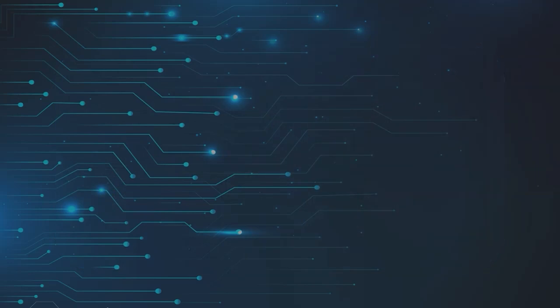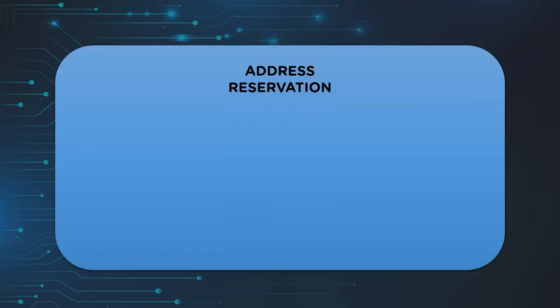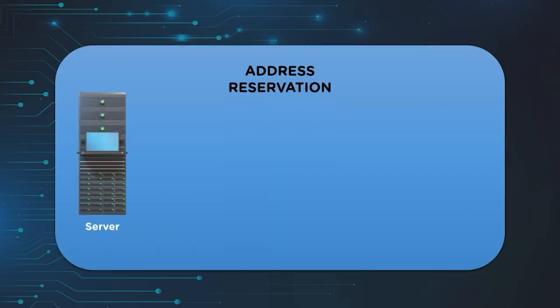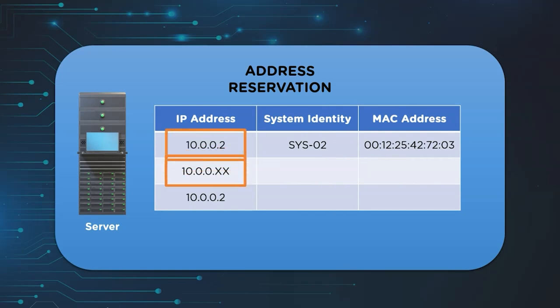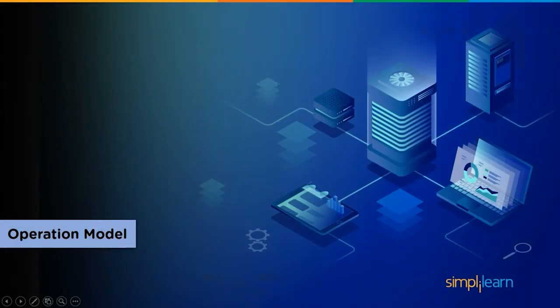Lastly we have address reservation. In this DHCP setting, the client device requests the server to assign the same IP address to the device each time address allocation takes place. This is done by identifying the MAC address of the client device.